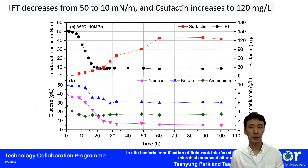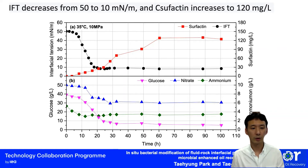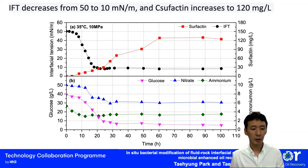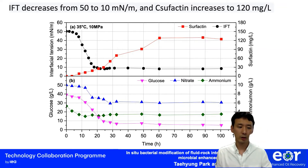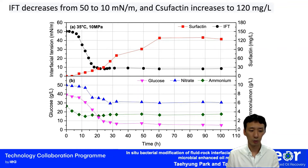At 35 degrees Celsius and 10 MPa, during bacterial growth and biosurfactant production, the interfacial tension decreased from 50 to 10 mN/m, and surfactant concentration increased to 120 mg/L. After the IFT reached its lower limit, even though surfactant concentration increased further, it did not reduce further. In the beginning, bacteria consumed glucose and ammonium as nitrogen source. But after ammonium was nearly depleted, they switched to nitrate as nitrogen source, and from that point the rate of surfactant production was significantly and dramatically increased.